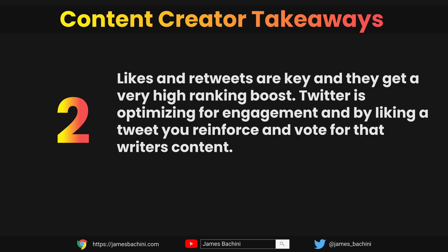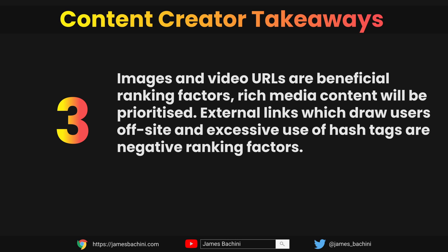Second, likes and retweets are key to ranking a tweet effectively and reaching the widest possible audience. If you can create a tweet that generates an emotional response and causes people to like it, it's going to reach a wider audience because Twitter actively promotes the tweets getting the most engagement. Third, rich content such as images and video is extremely important. Not everyone wants to record videos every time they tweet, but with machine learning image generators like Stable Diffusion and Midjourney you can create images very quickly, add that visual aspect to your tweet, and the ranking algorithm will see that favorably and push it to a wider audience.